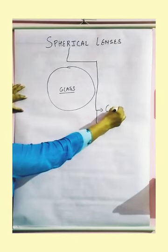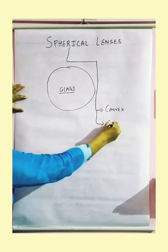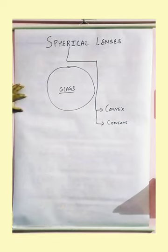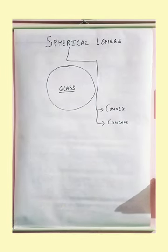One is your convex and the another one is your concave. Now we are going to see how the concave and convex is going to form from a glass.